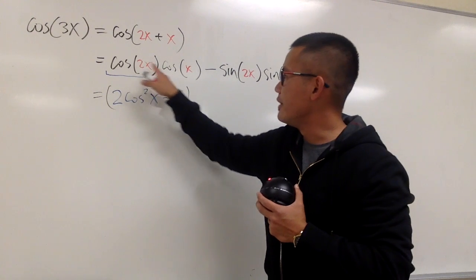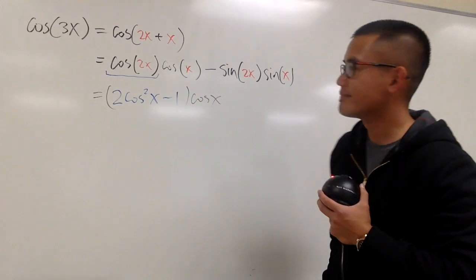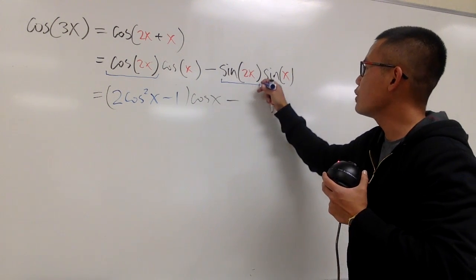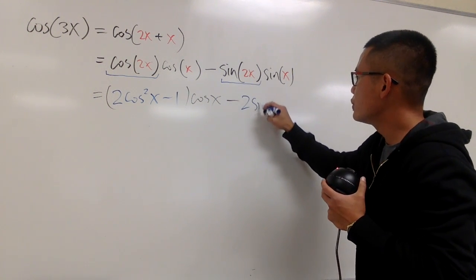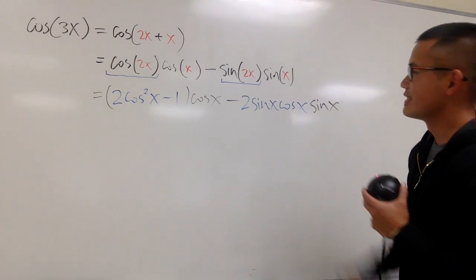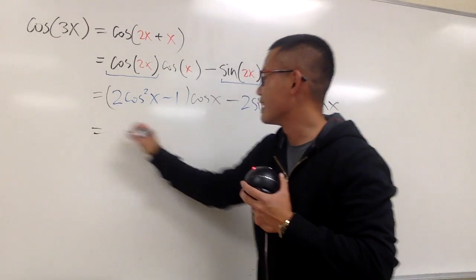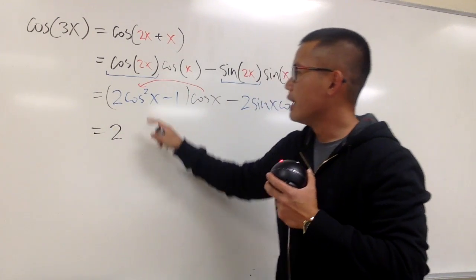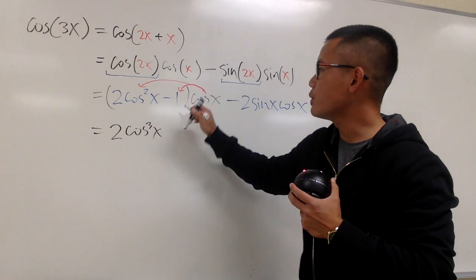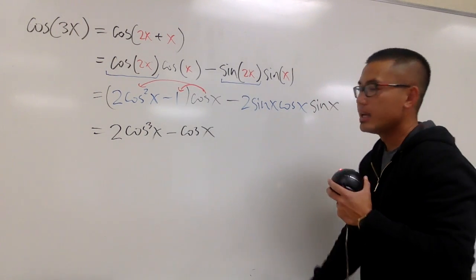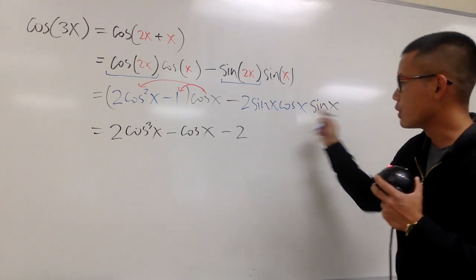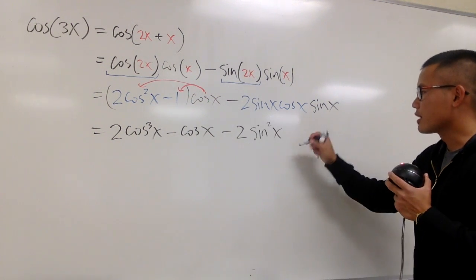Don't forget to put down parentheses, and then we still have to multiply this by cosine x. Then we have the minus, and we notice that sine of 2x is the double angle formula for sine, which we write as 2sin(x) times cosine x. And then we still have the sine x. Now let's multiply through: 2 times cos²x times cosine x gives 2cos³x, and then negative 1 times cosine x gives minus cosine x. For the last part, we put minus 2, and then sine x times sine x gives sin²x, times cosine x.